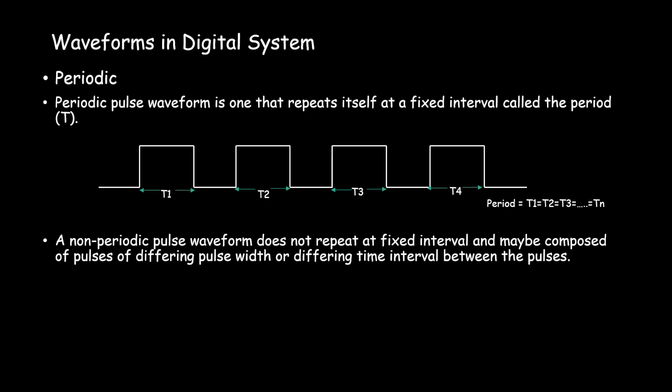A non-periodic pulse waveform does not repeat itself at fixed intervals and may be composed of pulses of differing pulse width at different time intervals between the pulses. Here you can see an example of a non-periodic waveform.